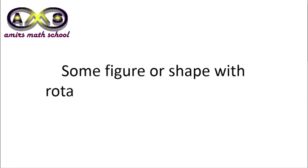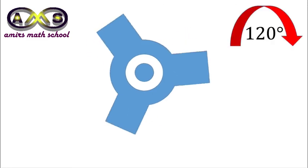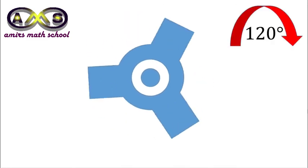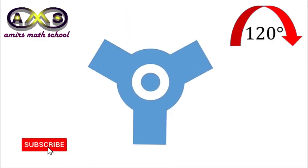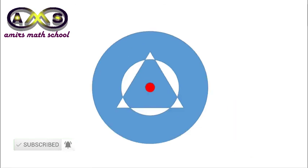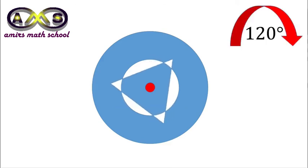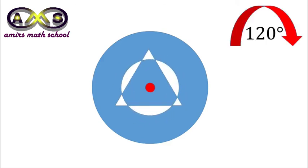Now, some figures or shapes with rotational symmetry of order 3. After 120 degree rotation, this figure reaches its initial position. So, this figure has rotational symmetry of order 3. The same result for another figure — it also has rotational symmetry of order 3.